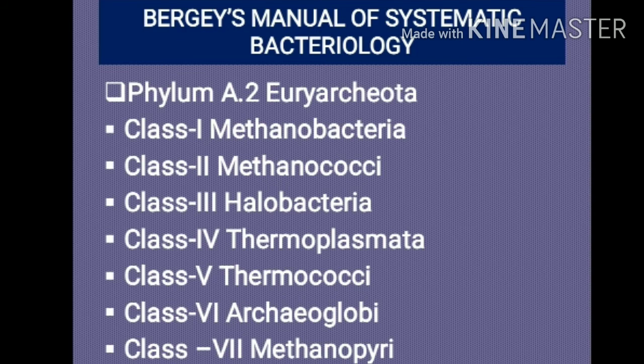Phylum Euryarchaeota is much larger and more diverse than Crenarchaeota. It includes members with rods, cocci, irregular cocci, lancet-shaped, spiral-shaped, disc-shaped, triangular, or square cells. They may be gram-positive or gram-negative based on presence or absence of pseudomurein in cell walls; in some members cell walls contain protein or are absent, such as Thermoplasma. Phylum Euryarchaeota consists of seven classes: Methanobacteria, Methanococci, Halobacteria, Thermoplasmata, Thermococci, Archaeoglobi, and Methanopyrae.